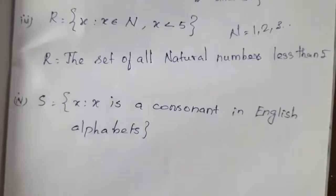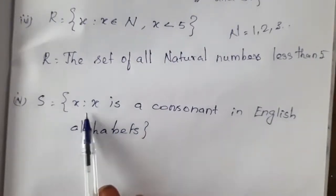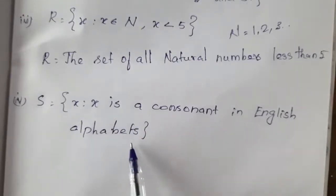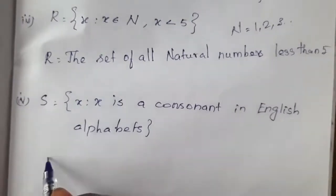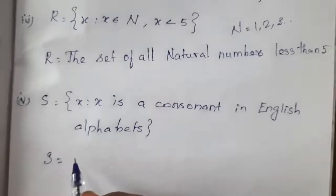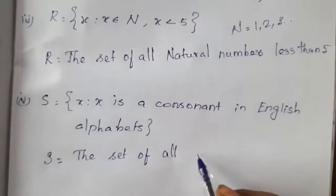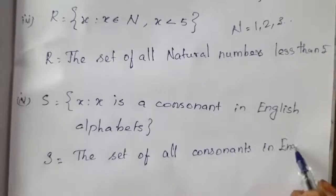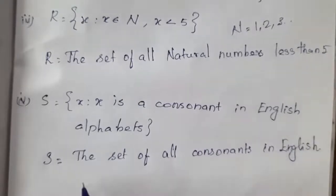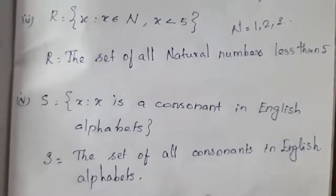Last question: Set S = {x | x is a consonant in the English alphabet}. What are the consonants? In descriptive form: S = the set of all consonants in the English alphabet.